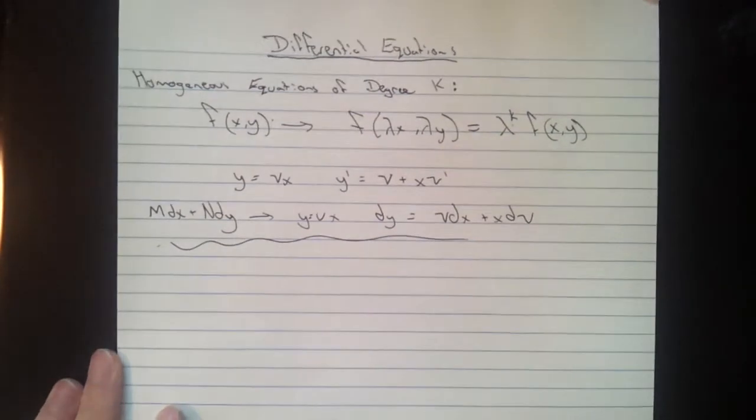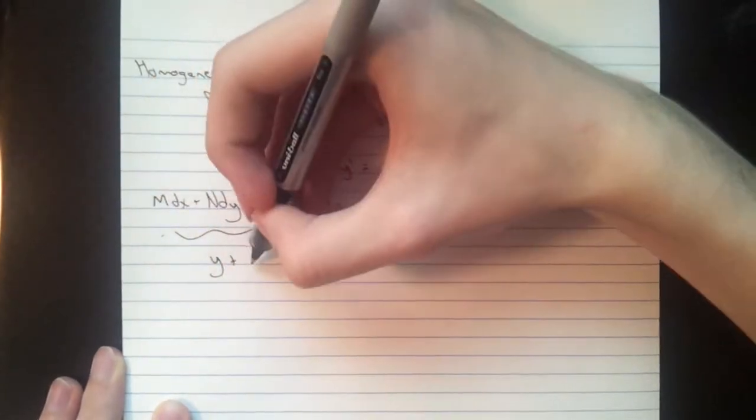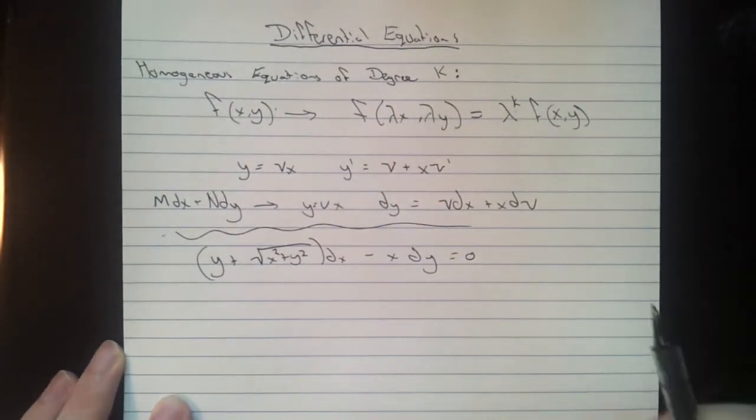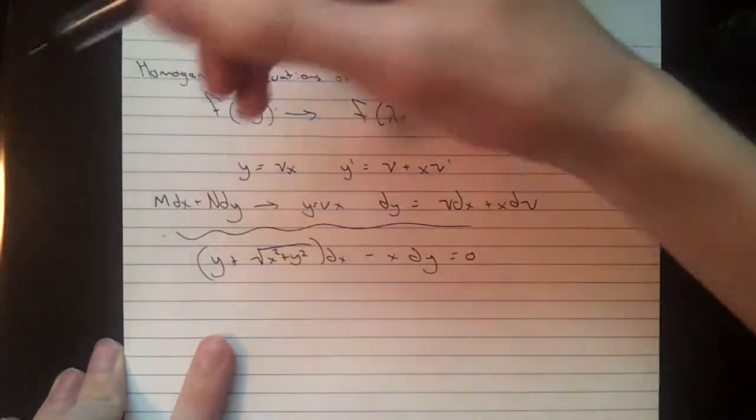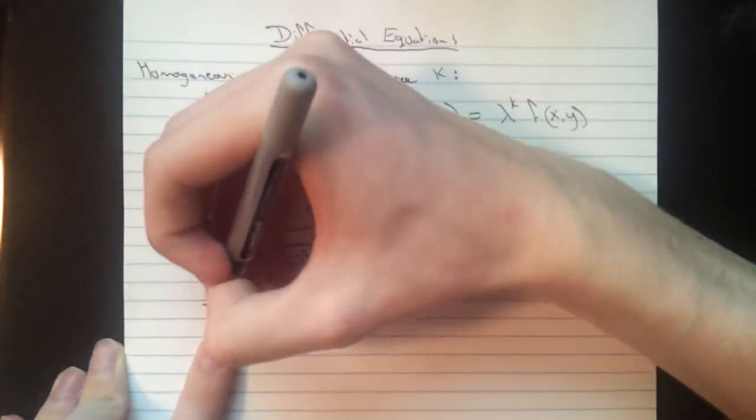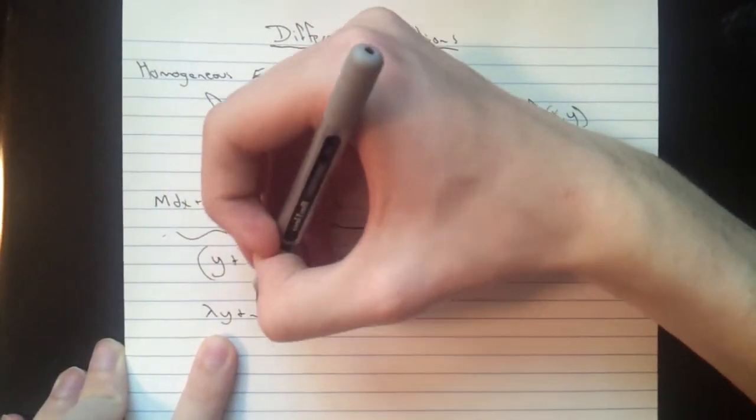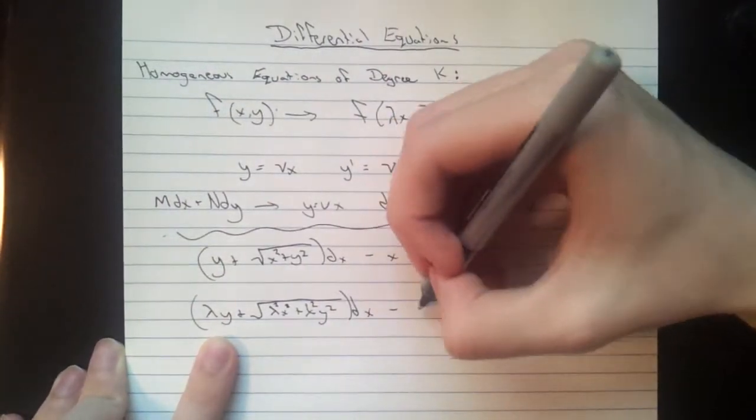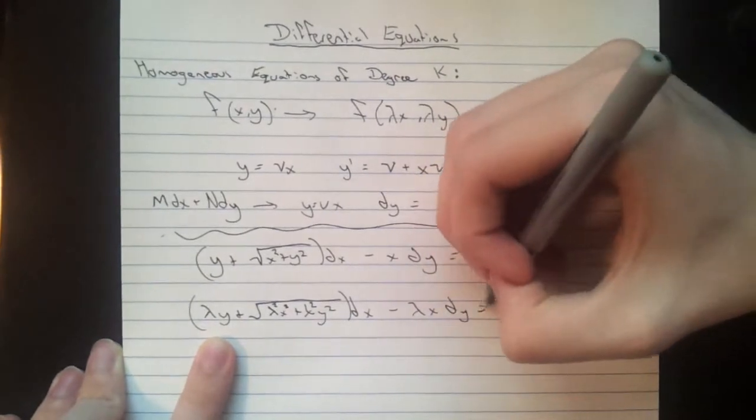All right, so let's do an example here. We're given y plus square root x squared plus y squared dx minus x dy equals zero. So we're going to do our first check for homogeneous. So we're going to end up with, replace every y with lambda y, replace every x with lambda x, we get lambda y plus the square root lambda squared x squared, lambda squared y squared dx minus lambda x dy equals zero.